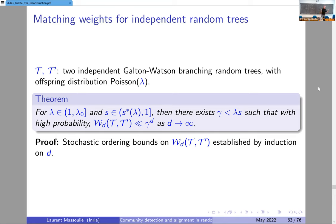Now, if we take a correct match, then we know that there is a neighborhood of that correct match in the intersection tree that will be a tree common to the two neighborhoods. And so this tree common to the two neighborhoods is in distribution close to a Galton-Watson branching process with Poisson number of offspring with parameter lambda times s. That's because the intersection graph is another Erdős–Rényi graph with average degree lambda times s.